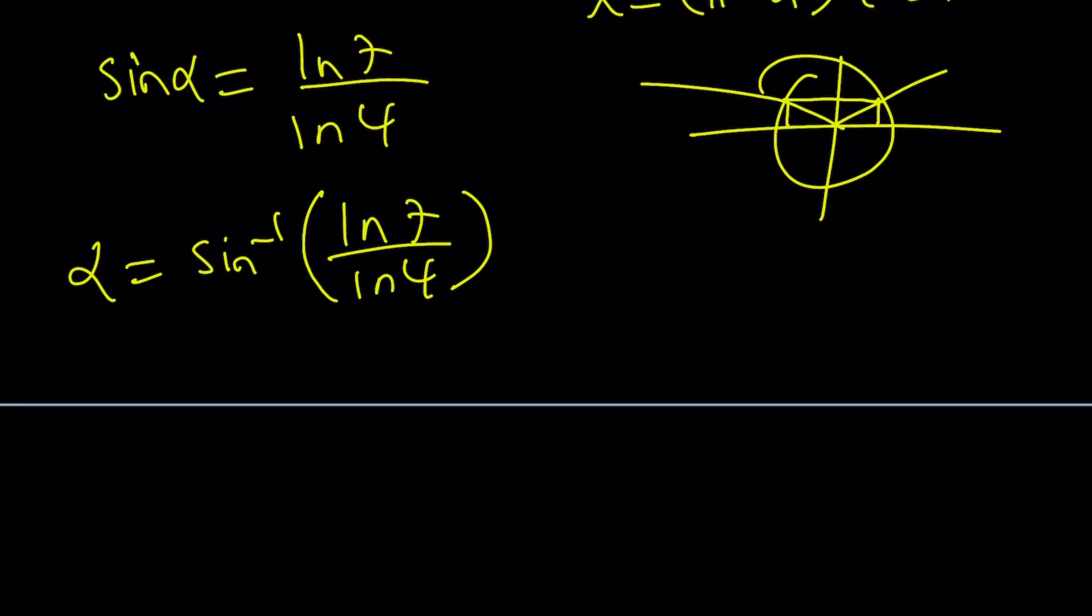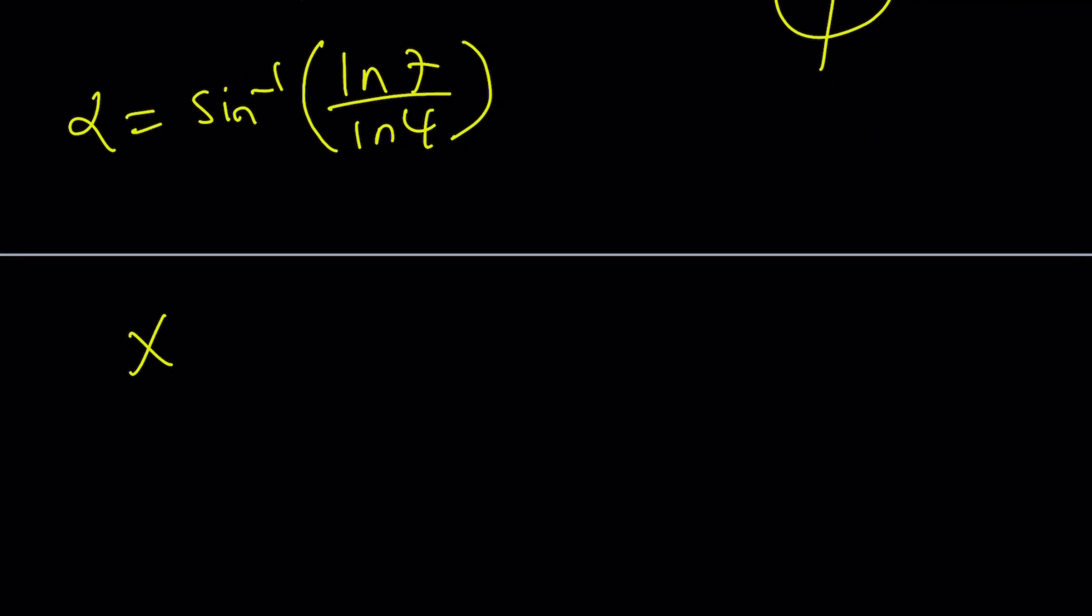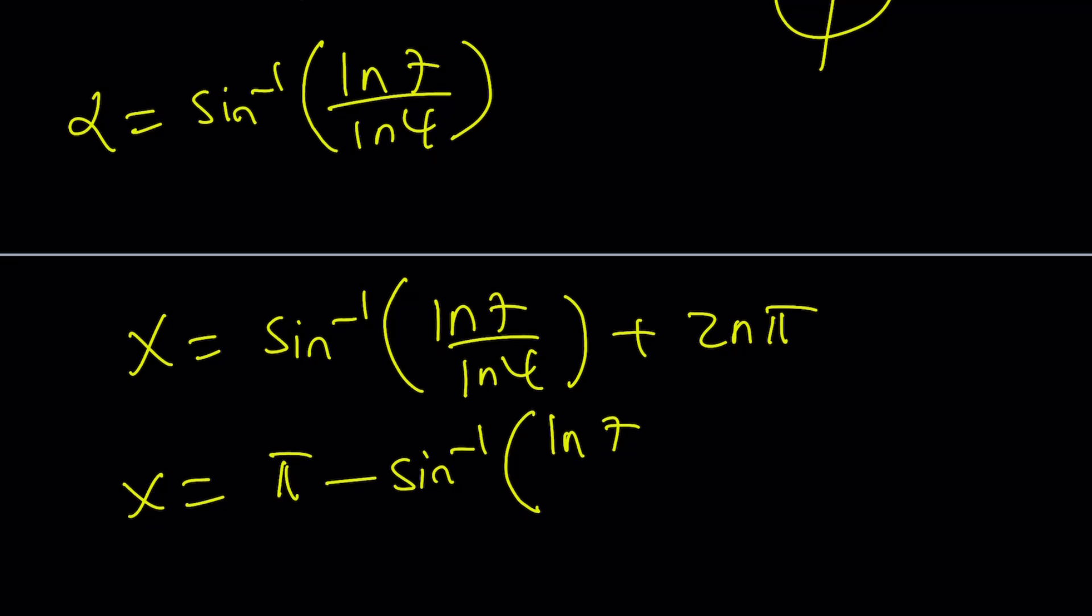What is the problem? Well, let's go ahead and write down the solutions first. x equals alpha, which is sine inverse of ln 7 over ln 4, plus 2n pi. And the other x value should be pi minus this angle. Notice that sine inverse of something represents the angle whose sine equals that expression. So we got these two solutions, right?